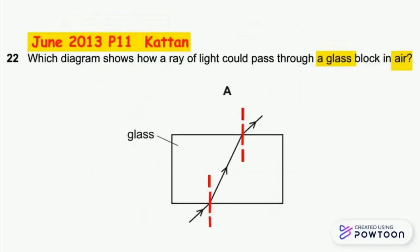In diagram A, we draw two perpendicular dotted lines at the lower and upper sides of the glass block. We name them normals.